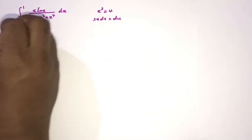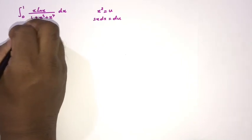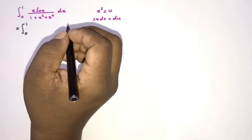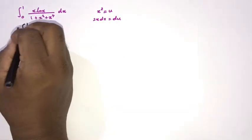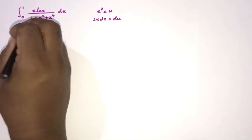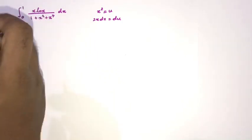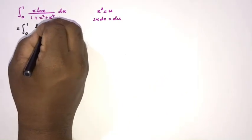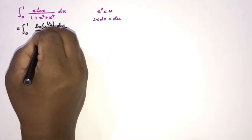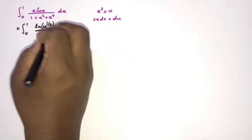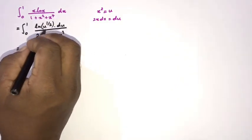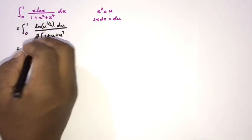We can plug in here. The limits remain 0 to 1. We know x equals u to the one-half, so x times the natural log of x becomes u^(1/2) times ln(u^(1/2)), and x dx becomes du/2. In the denominator, 1 plus x² is (1 + u) and x⁴ is u². Using the log property, the factor of one-half comes outside, giving 1/4 overall.